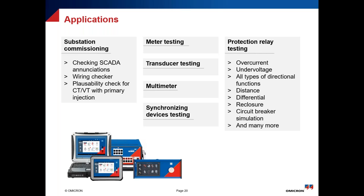The applications covered by CM Control include substation commissioning — SCADA annotation, wiring check, CT/VT basic ratio test, meter testing, transducer, multimeter, synchronization device testing, and protection relays. All functions can be tested. Don't forget, this is basic testing: overcurrent, undervoltage, all types of directional function, distance, differential, recloser, circuit breaker simulation, and many more.